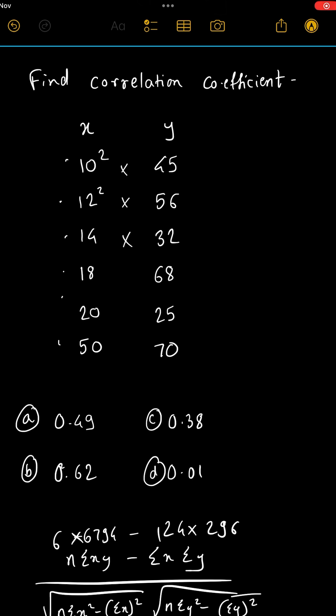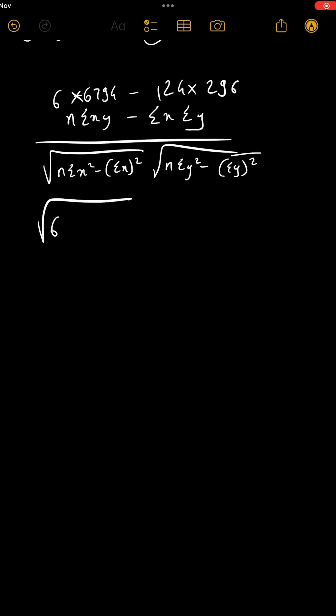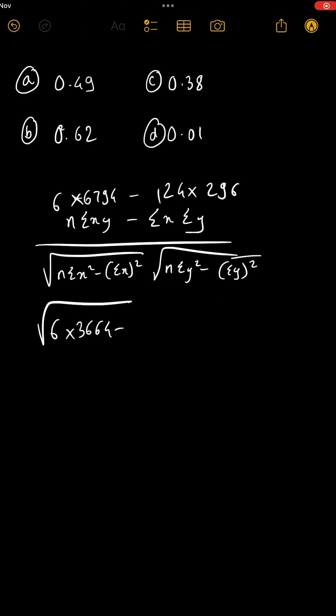And check if when you press MRC you should get 3664 minus summation x bracket square, that is 124 square.